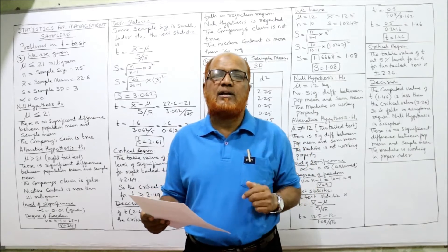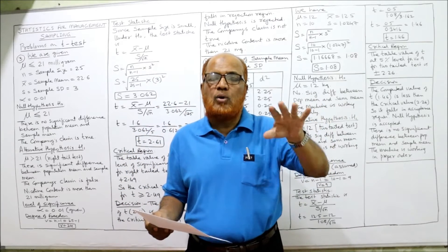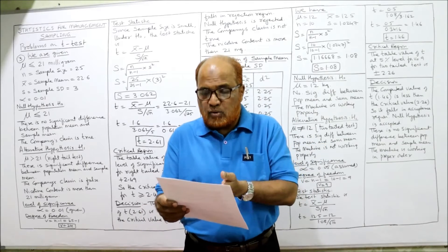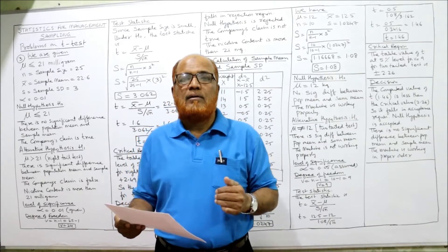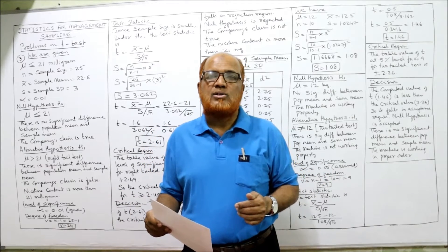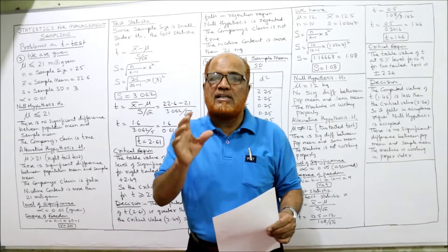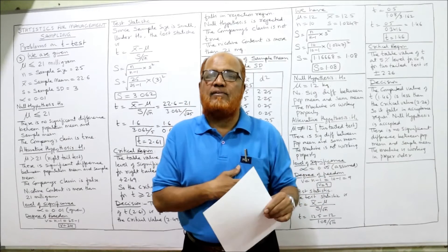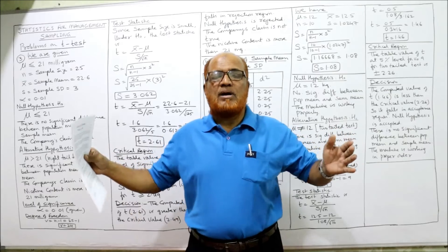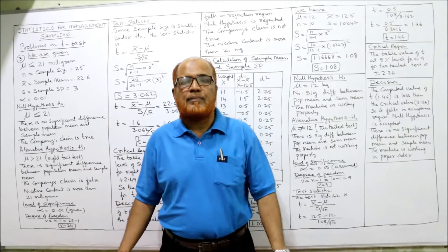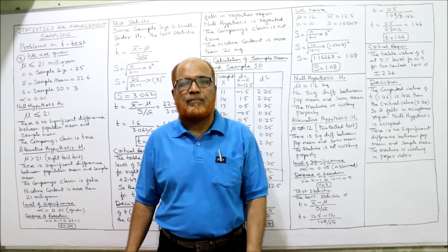The average nicotine found in the sample is 22.6 milligrams, but the company contends no more than 21. Apparently it looks like the company's contention is false. However, we cannot outright reject the claim — we must apply the steps of sampling to find out whether the difference is significant or insignificant, and then decide whether to accept or reject the company's claim.